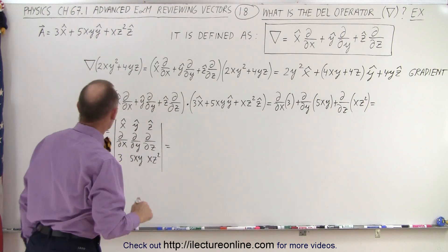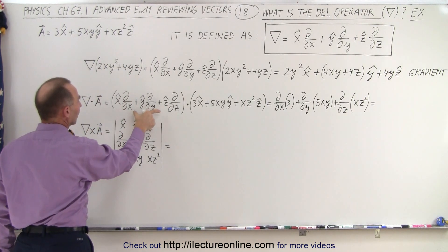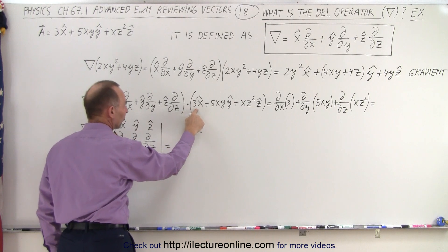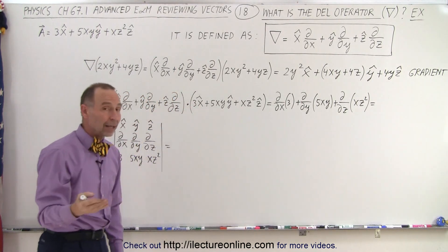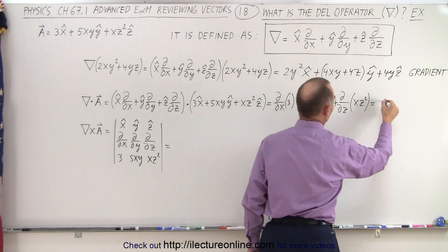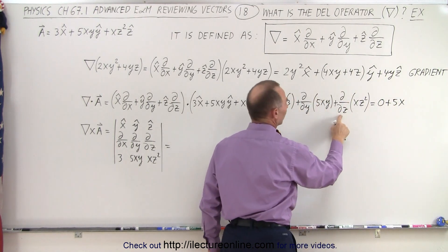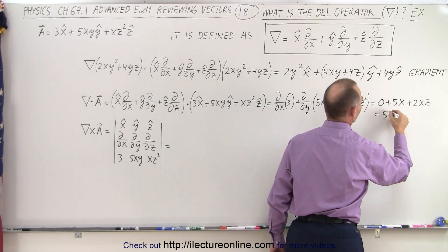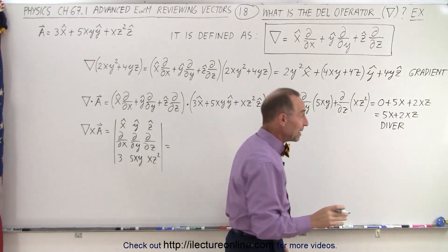Now we're going to use the DEL operator and operate on a vector quantity, vector A, which is defined here. We use the DEL operator dot product with the vector. This means taking the partial derivative with respect to x of the x component, the partial derivative with respect to y of the y component, and the partial with respect to z of the z component. The partial with respect to x is 0, with respect to y gives 5x, and with respect to z gives 2xz. This equals 5x plus 2xz, and this is called the divergence.